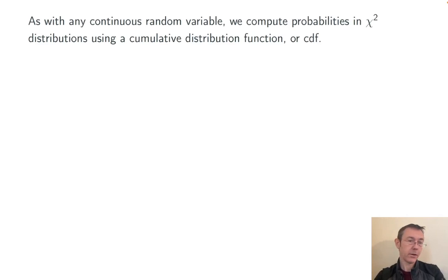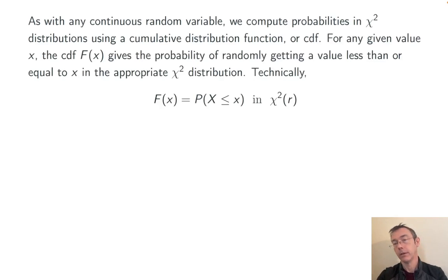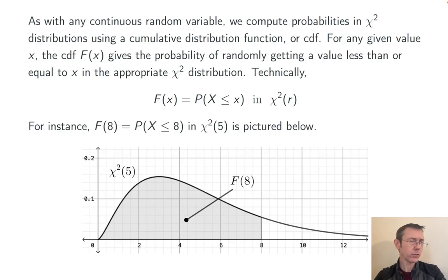As with any continuous random variable, we compute probabilities in χ² distributions using a cumulative distribution function, or CDF. For any given value x, the cumulative distribution function F(x) gives the probability of randomly getting a value less than or equal to x in the specified chi-squared distribution. Here's the technical definition. I think a picture is a little bit more clear. If you want to get F(8) in the chi-squared distribution with 5 degrees of freedom, it's the probability of randomly getting a value less than or equal to 8 in that distribution. It's that shaded area right there.